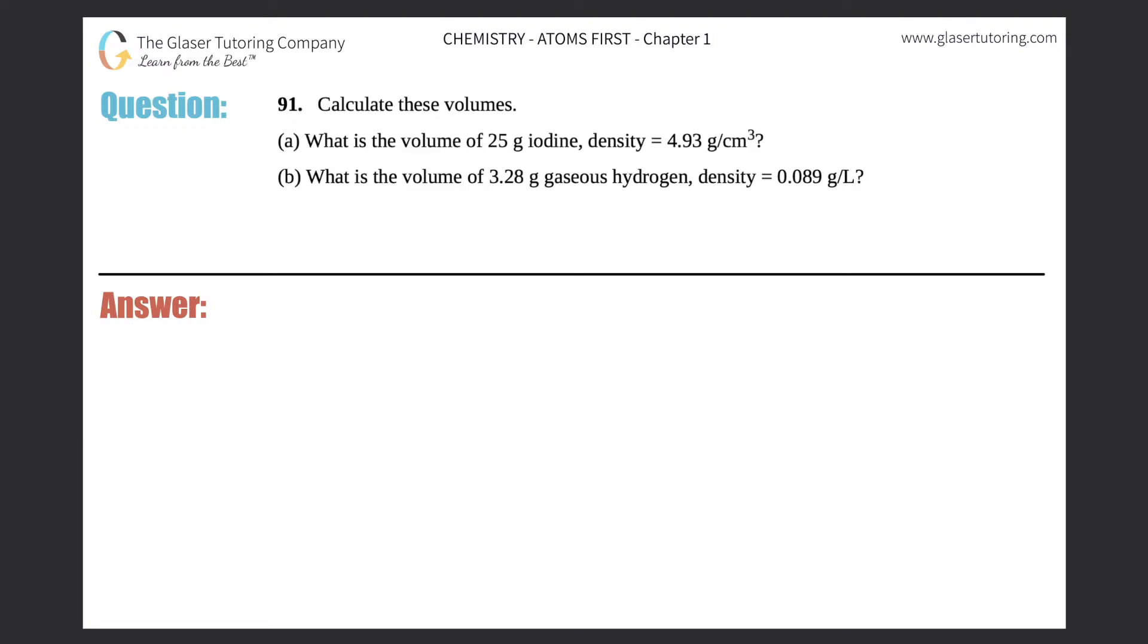Number 91, calculate these volumes. We have parts a and b, so let me just quickly write a over here and b over here. Now let's get down to part a. It says what is the volume of 25 grams of iodine with the density of 4.93 grams per centimeter cubed.